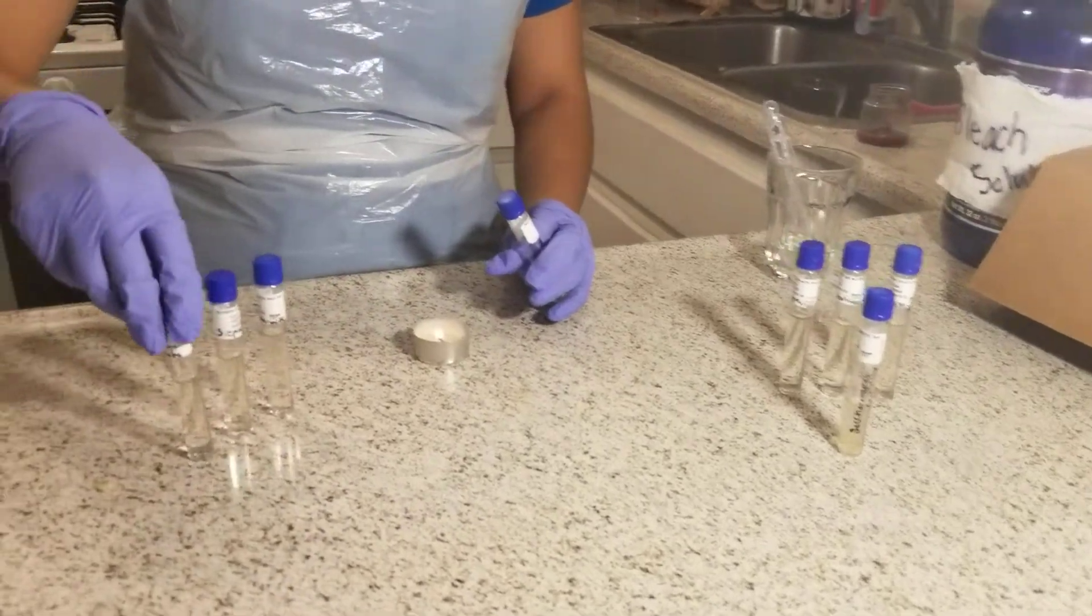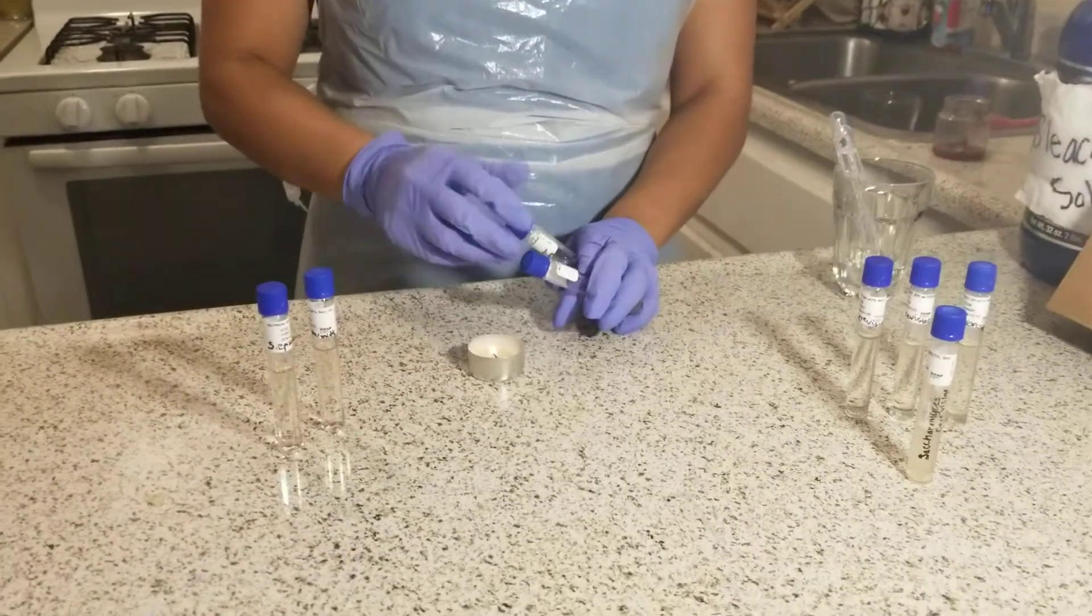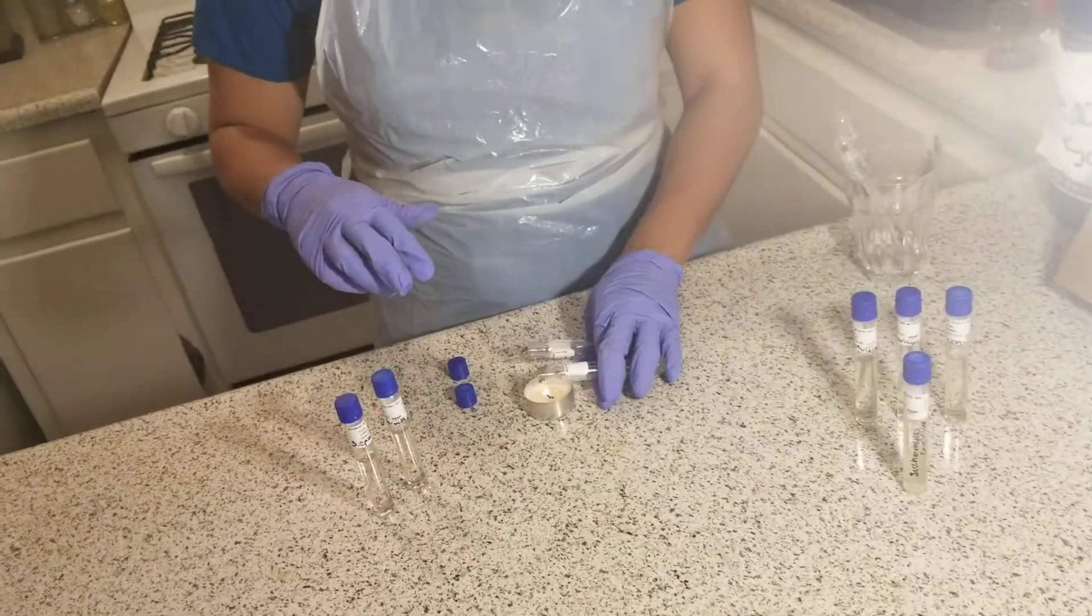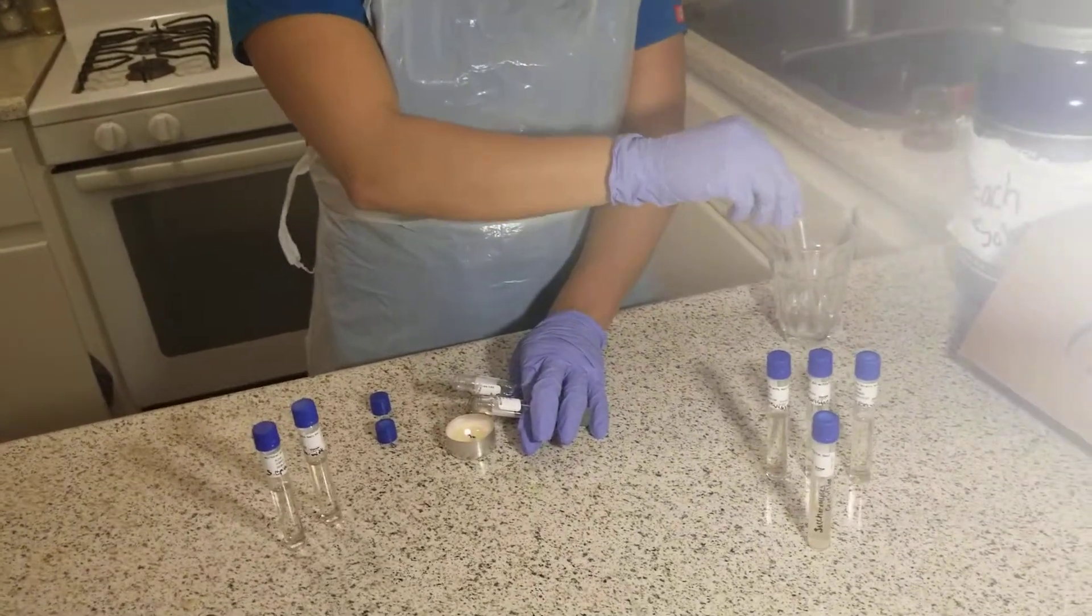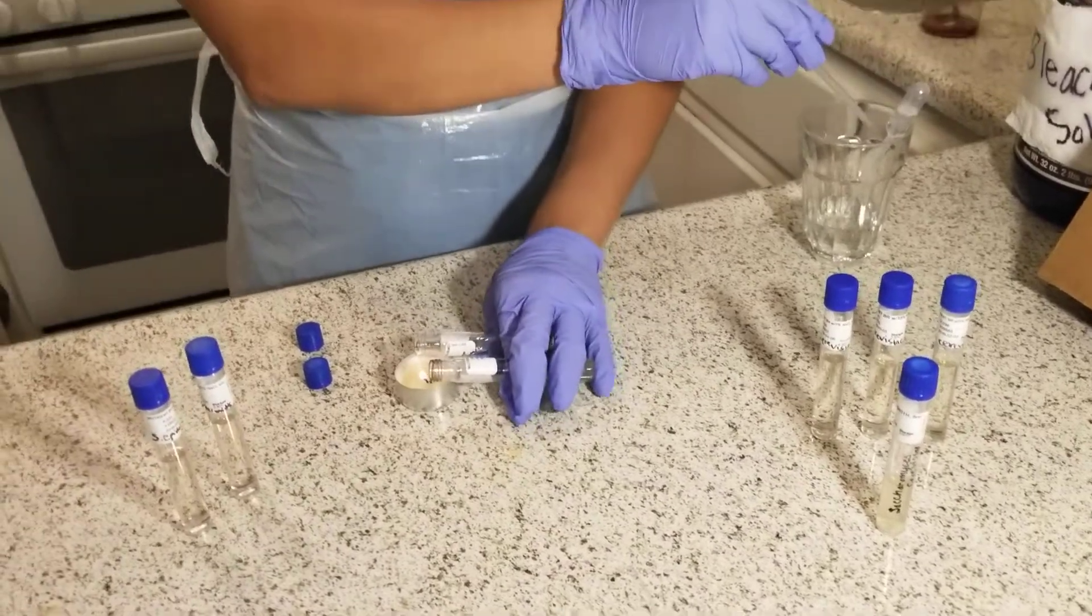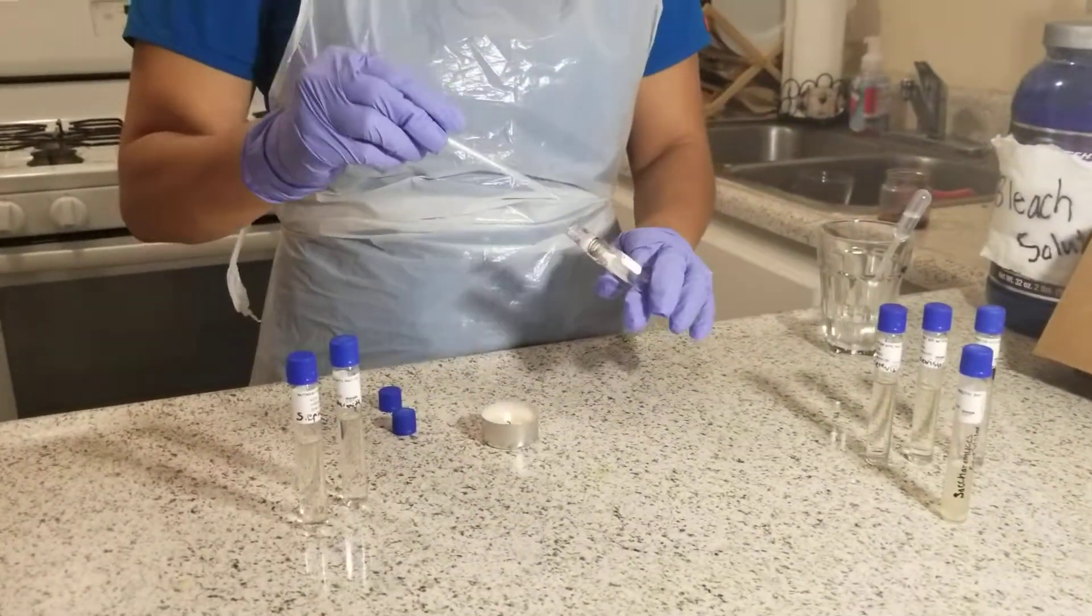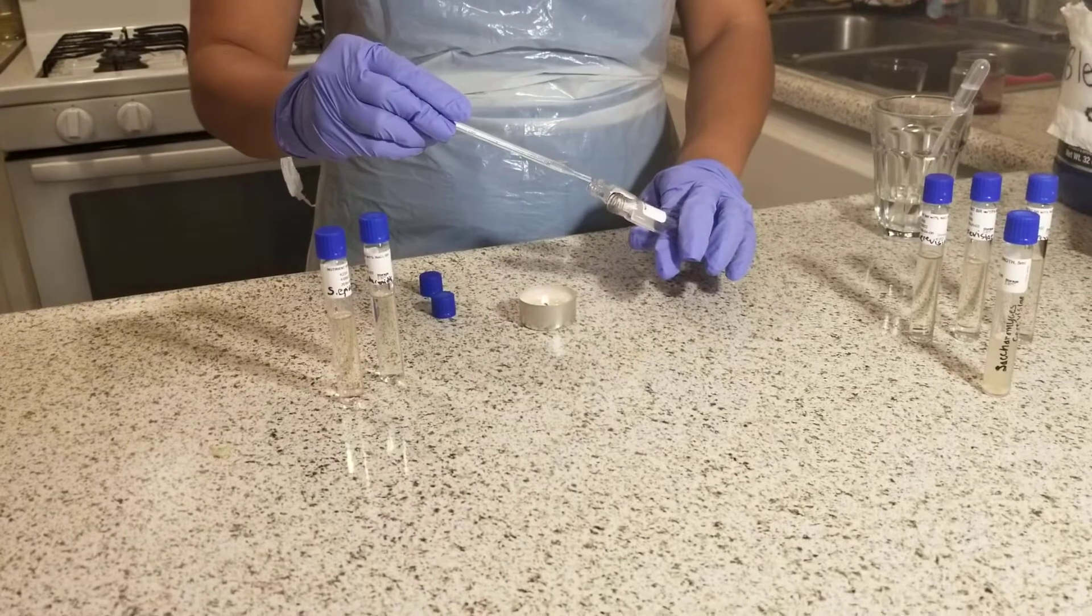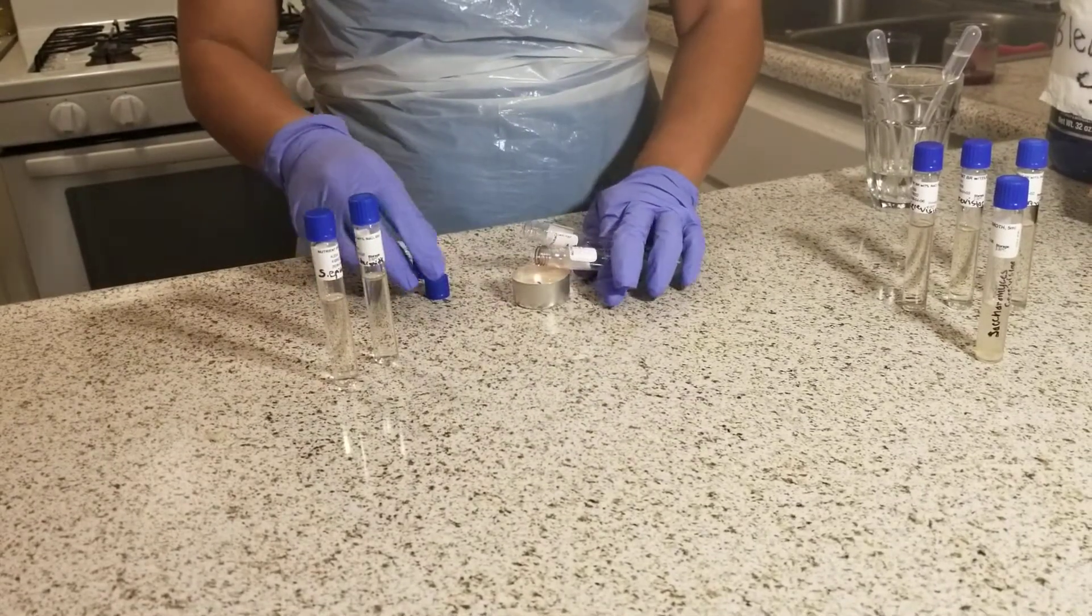Lastly, I'm going to grab the 15% sodium chloride tube. Same procedure. I'll sterilize the lid, collect 2 drops of the bacteria, and transfer them into the sodium chloride. Then I'll sterilize the lids of both tubes.